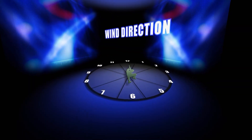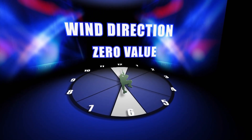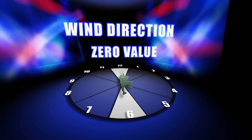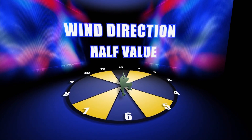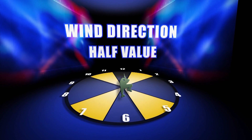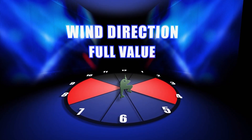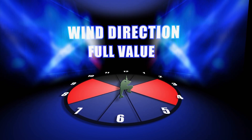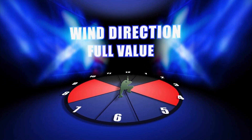When we talk about wind direction on the range, we use the clock system. Winds from the front or rear are zero value because they do not shift the bullet's flight. Winds from the 1, 5, 7, and 11 o'clock are half value. Winds from the 2 to 4 o'clock from the right, and from the 8 to 10 o'clock from the left, are full value and they have the greatest effect on the bullet.